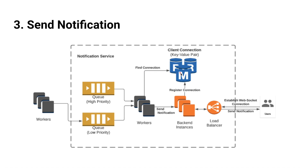Once that connection is found, it will forward the request to the backend instance that has the connection, and that backend will send the notification through the open WebSocket connection. One thing I didn't cover yet is how a user establishes a connection with our system. A mobile or web user device can spin off a background service to create a WebSocket connection with one of our notification backend instances. We should then persist this connection information in a key-value database — the key will be the user identifier and the value will be the machine identifier — and persist the client connection info in that key-value DB.